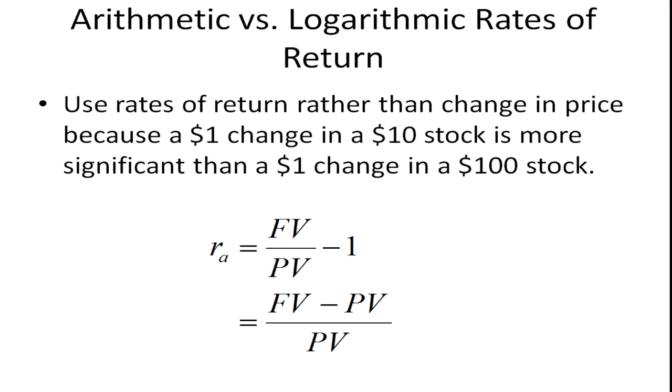So that's why we look at rates of return. The standard rate of return or arithmetic rate of return, which we signify with the R subscript A for arithmetic, is the future value divided by the present value minus one. Or you can also write future value minus present value all divided by present value. So it's essentially what you get minus what you paid divided by what you paid.